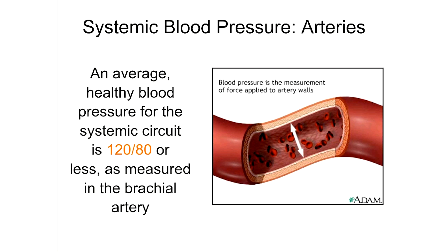Anytime we have a blood pressure in a vessel we get two numbers. The first, higher number — in this case 120 — is the systolic pressure. The systolic pressure occurs when the heart is contracting and actively pushing blood into the vessels, so pressure in those vessels is higher than when the heart is relaxing.